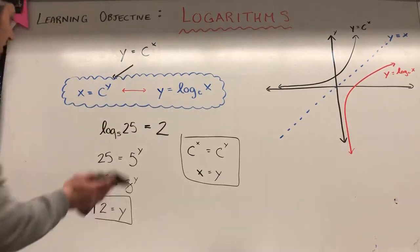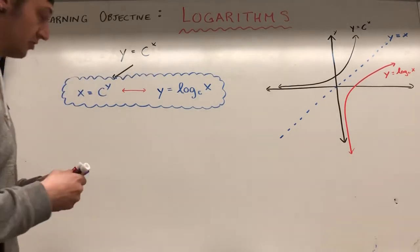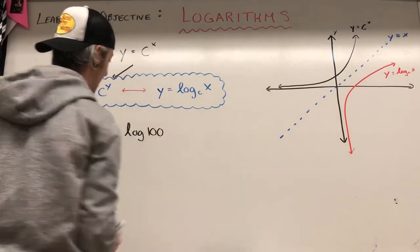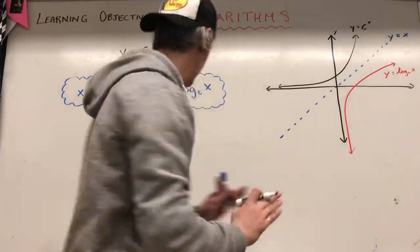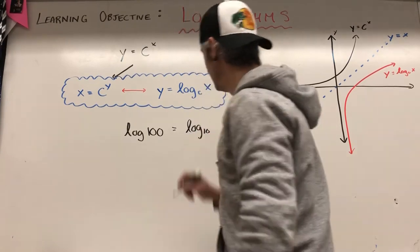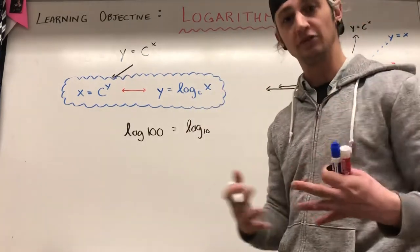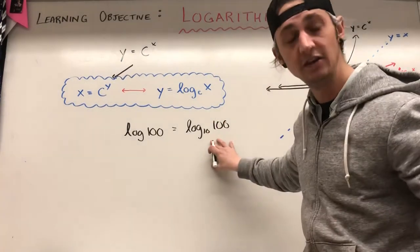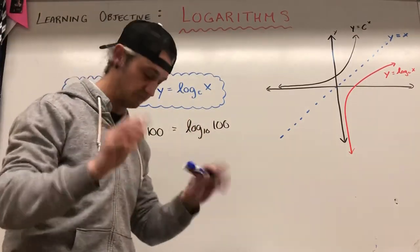One important thing to know: generally speaking, if they don't write a base — say just log of 100 — you assume it's base 10. If there's no base written, it's base 10, always, because we approach our world from a base 10 perspective. Just a little thing to know: no base given means base 10.